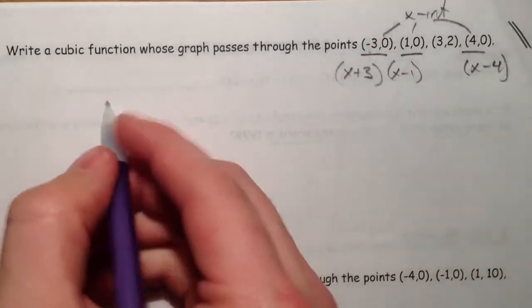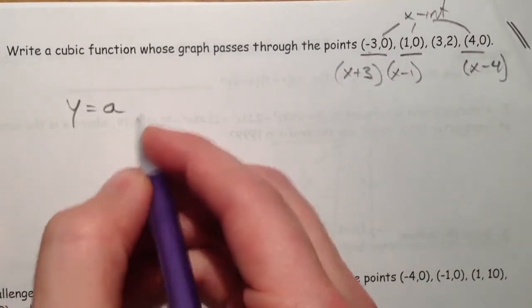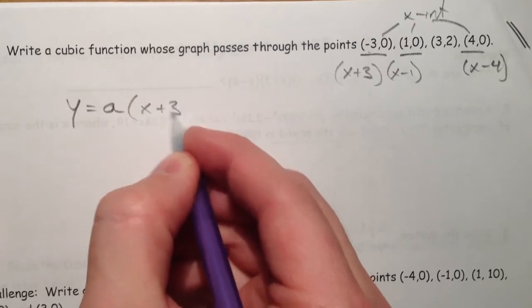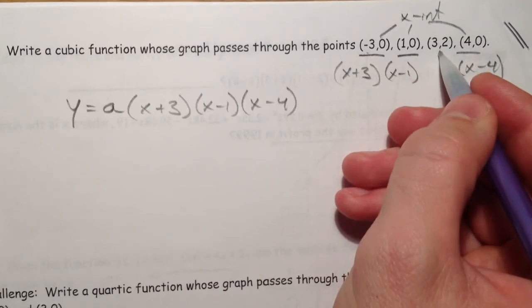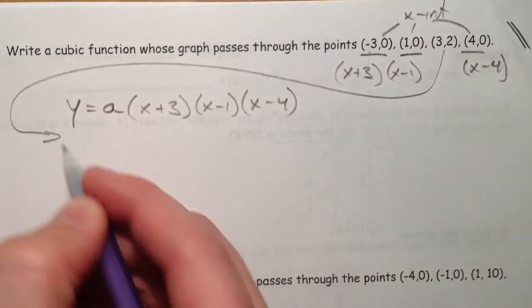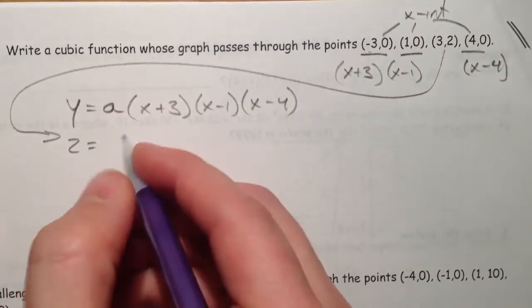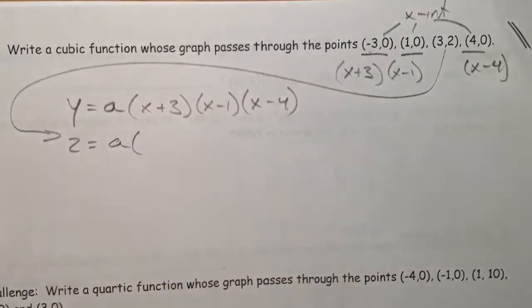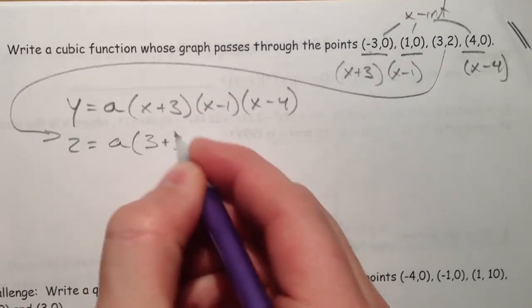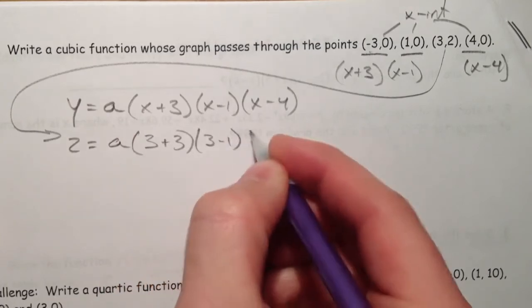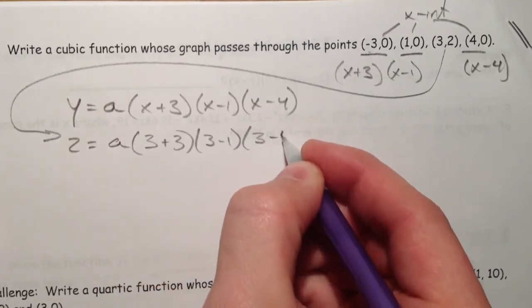So, y equals some a constant, x plus 3, x minus 1, x minus 4. And I plug in y equals 2 when my x is 3. So 3 plus 3, 3 minus 1, 3 minus 4.